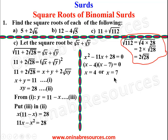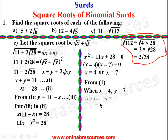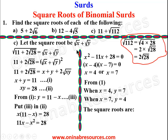So x = 4 or x = 7. From equation 1: when x = 4, y = 7, and when x = 7, y = 4. Since the connector is addition, substituting either pair gives the same result. The square roots are √4 + √7 = 2 + √7. That is the end of the solution to part (c).